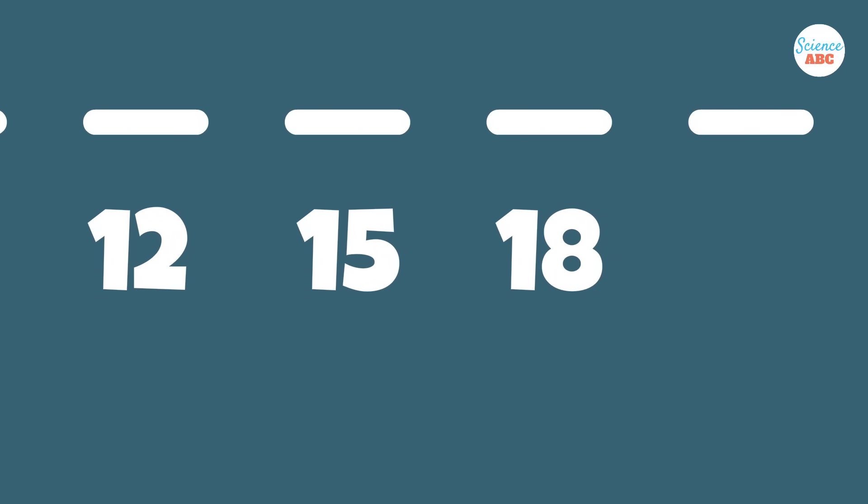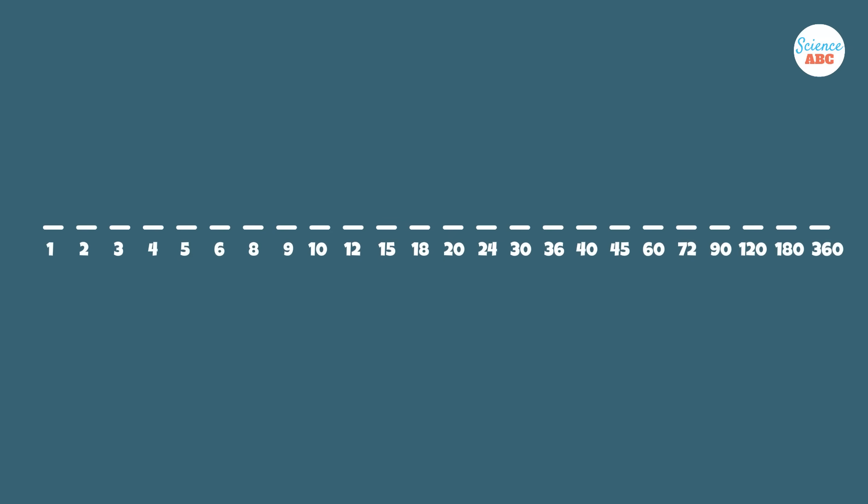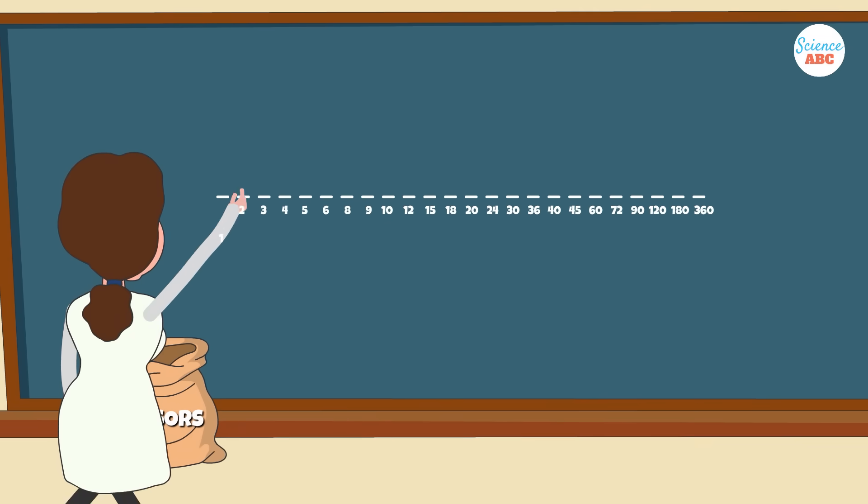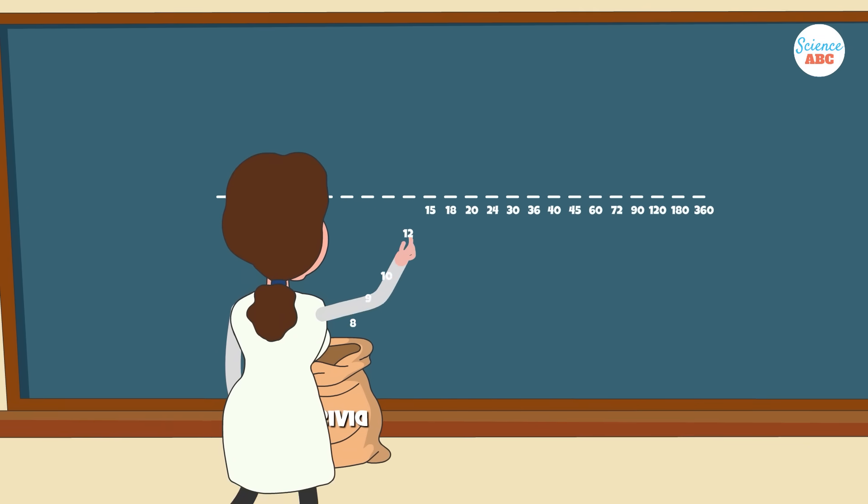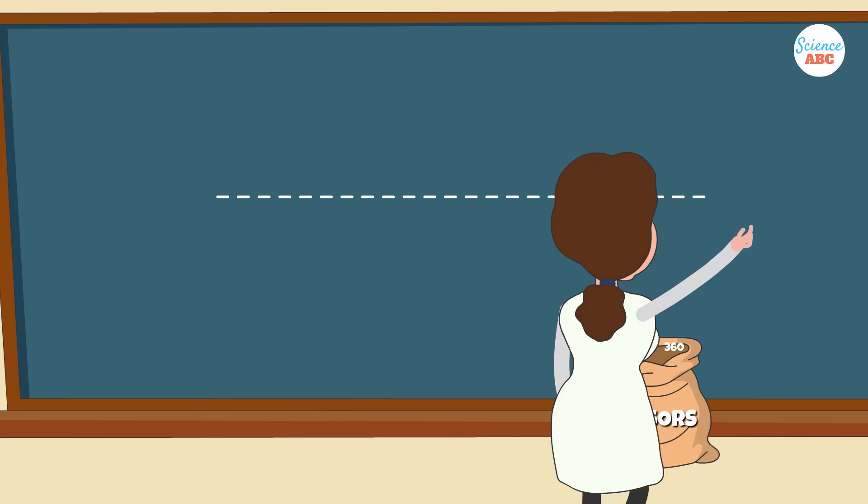Those divisors are: 1, 2, 3, 4, 5, 6, 8, 9, 10, 12, 15, 18, 20, 24, 30, 36, 40, 45, 60, 72, 90, 120, 180, and 360 itself. These 24 numbers are called the divisors of the number 360.